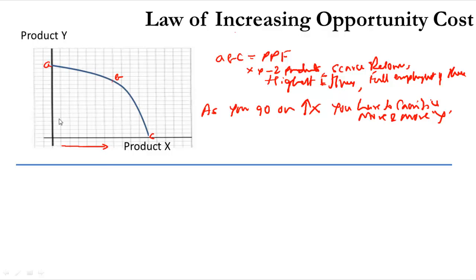Let us examine using this graph. Initially we increase X from 0 to X1 and we call it delta X1. Then we increase from X1 to X2, we call it delta X2. Then from X2 to X3, we call it delta X3. From X3 to X4, we call it delta X4. From X4 to X5, we call it delta X5. X1, X2, X3, X4, X5 are such that each increment is equal in quantity.